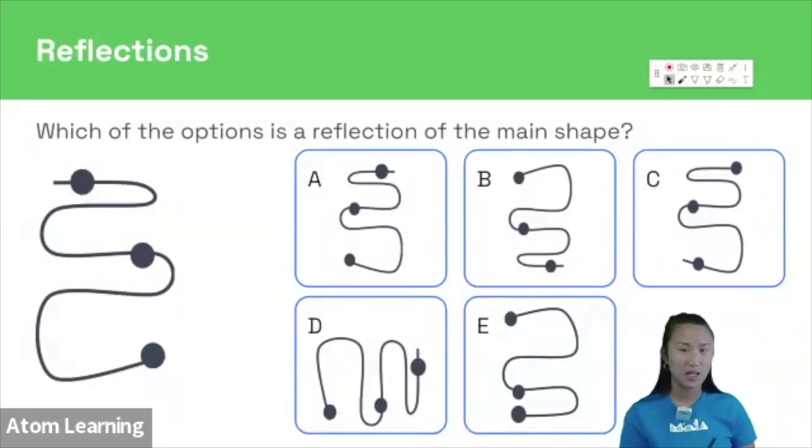With this in mind, let's do a little walkthrough. If you're feeling confident, shout out in the Q&A what you think the answer is. But let's apply our method. We need to choose the answer option which is a reflection of the main shape. So first off, let's identify the elements of the main shape.